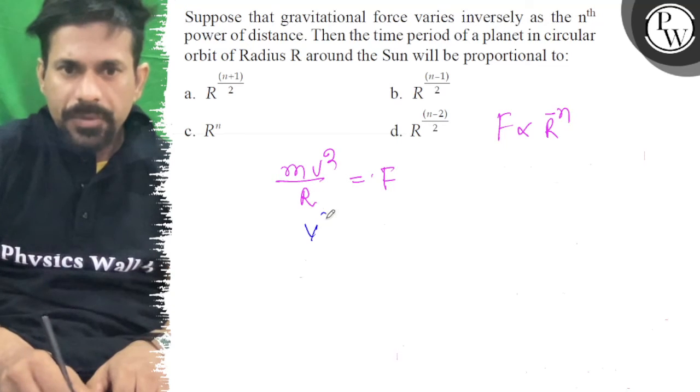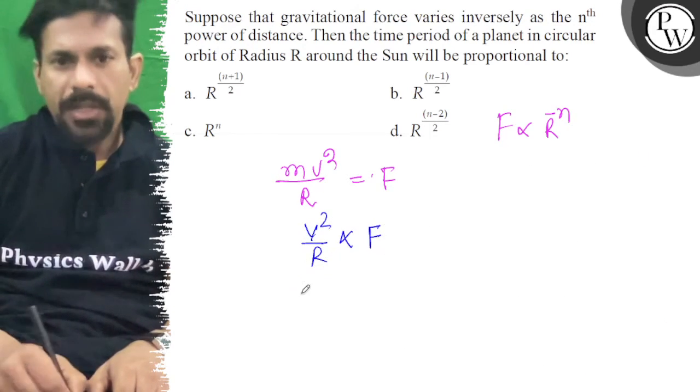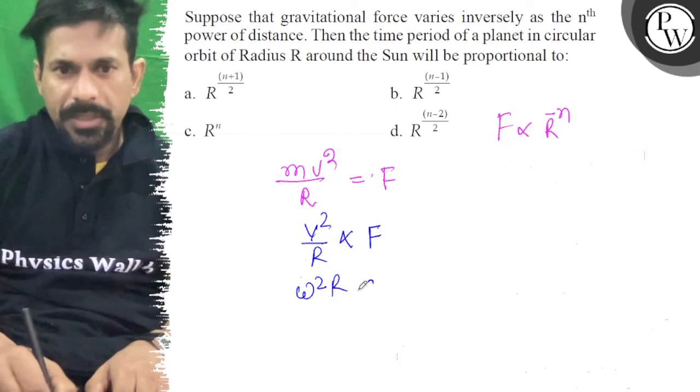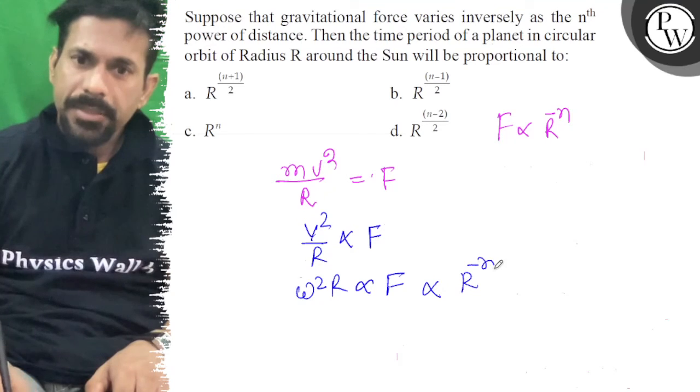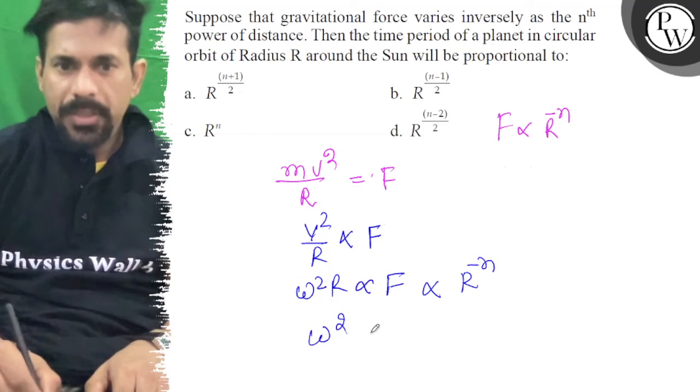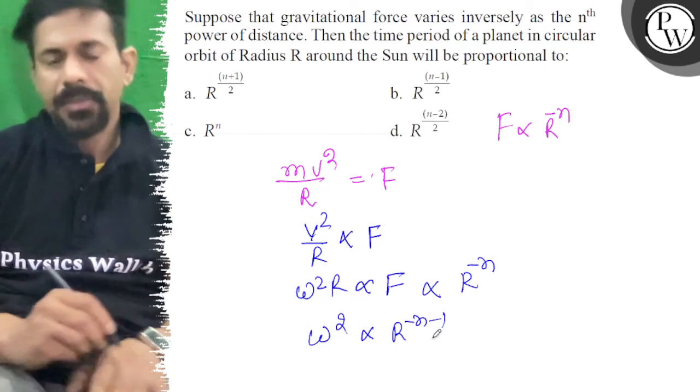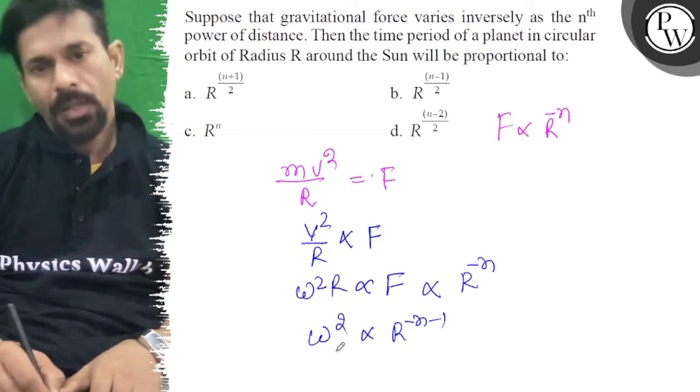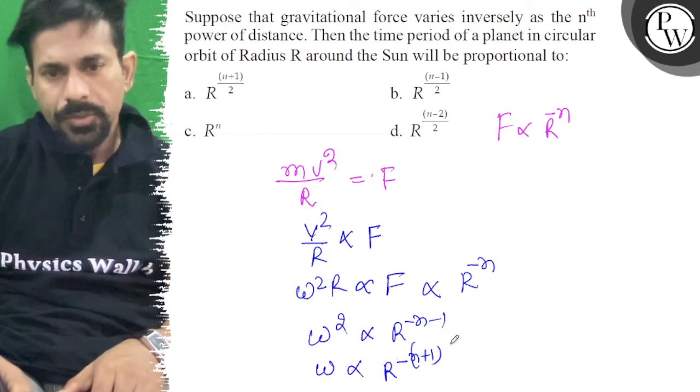We can write that v squared by r is directly proportional to F, or omega squared r is directly proportional to F, and F is proportional to r to the power negative n plus 1. So omega is proportional to r to the power negative n plus 1 by 2.